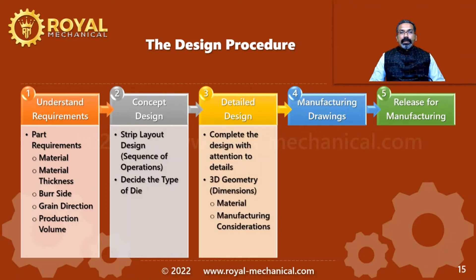Step 3 is to perform the detailed design. In this step, we are going to finalize the 3D design with attention to details. We are going to finalize each and every dimension, and decide what type of material to be used for each and every part of the press tool. The entire design process is with due consideration for manufacturability — that is, design for manufacturability.